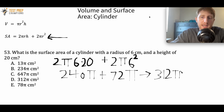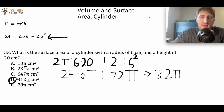Over here in all the answer choices we see that pi is left in the answer choices, which makes our life easier. If we didn't see pi in the answer choices you would just do 312 times 3.14, but in this case we don't have to multiply by 3.14, so 312π is the answer.